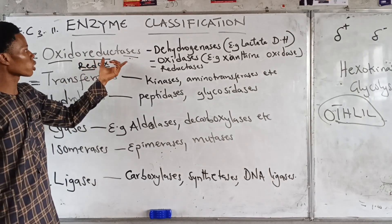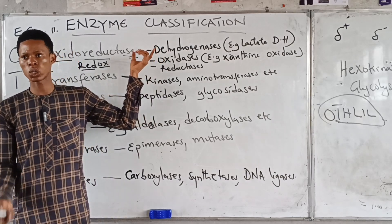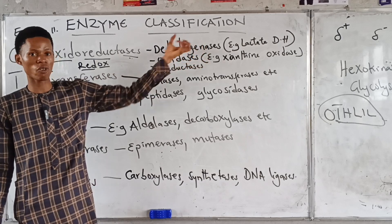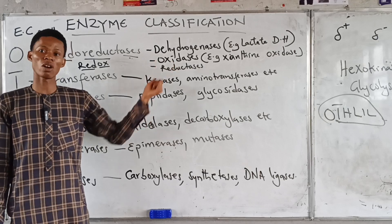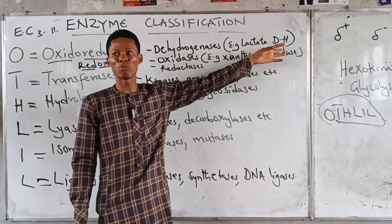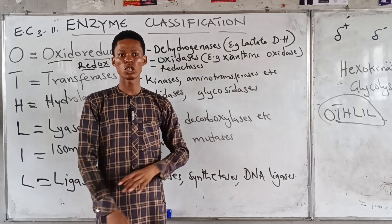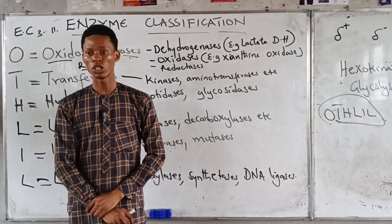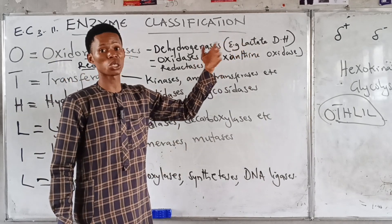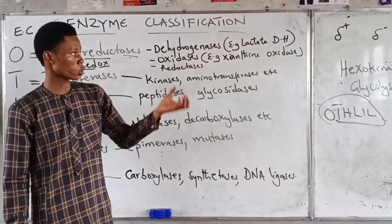Examples of oxidoreductases are dehydrogenases. The prefix 'de' means removal, so dehydrogenase means remover of hydrogen. Lactate dehydrogenase is an enzyme that removes hydrogen from lactate — that is oxidation. It converts lactate to pyruvate by an oxidation reaction.